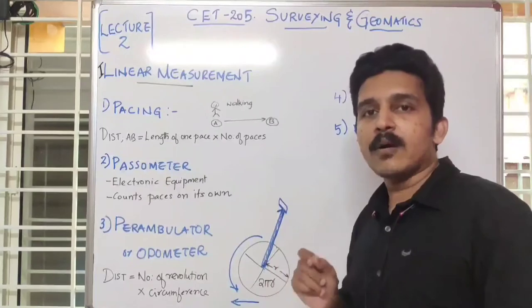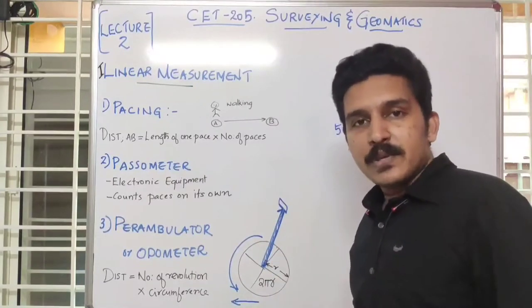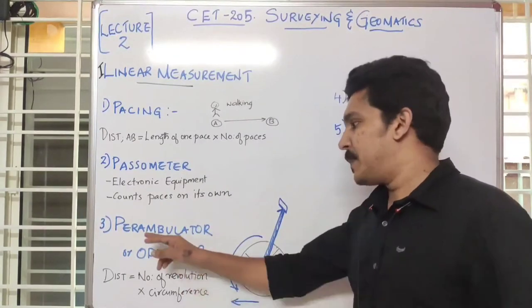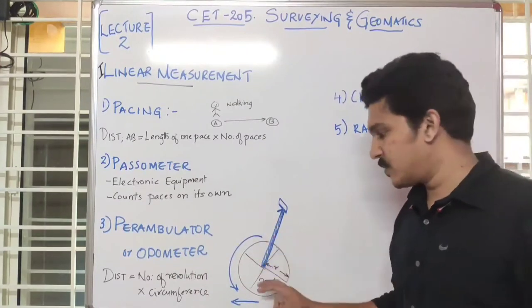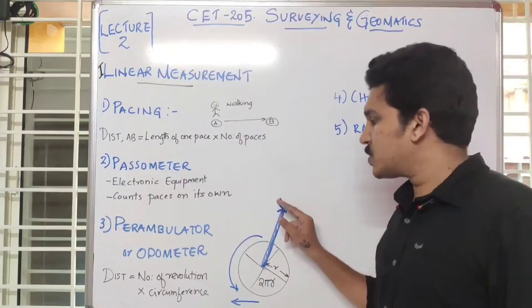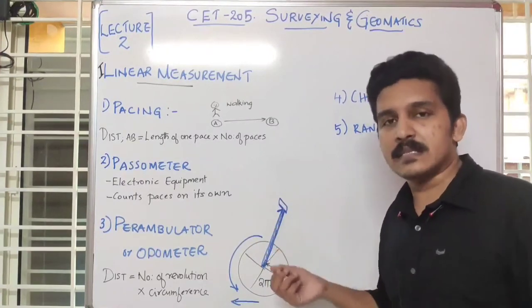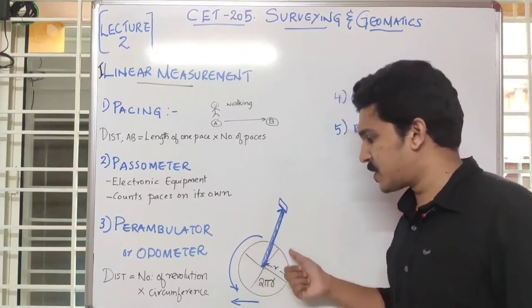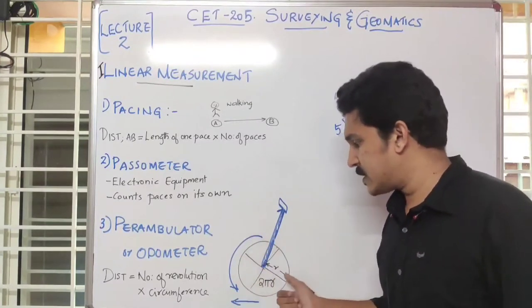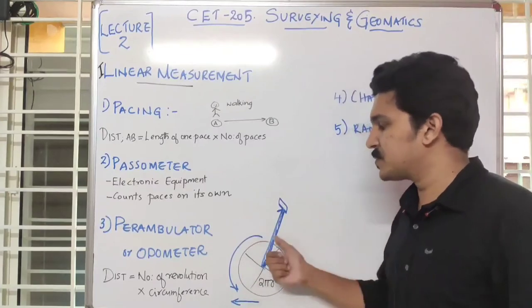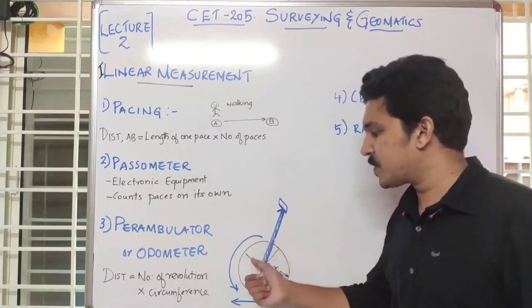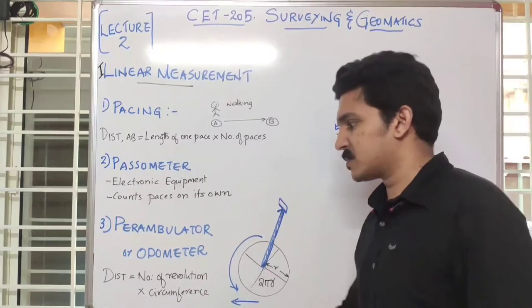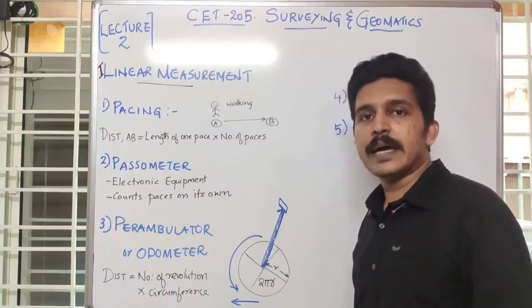This passometer is what we find in all of our smartwatches. The third instrument is a perambulator, or an odometer. These are two different instruments but similar. A perambulator consists of a circular wheel with a handle, and also has a display for its electronic part where it calculates the distance. If we know the radius of the wheel, we can find the circumference. As we move the wheel forward, it rotates, and we calculate the number of revolutions made. The distance is then the number of revolutions multiplied by the circumference. The odometer uses the same principle in an automobile.